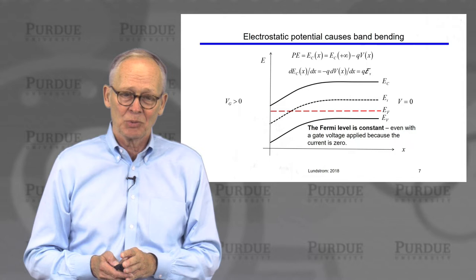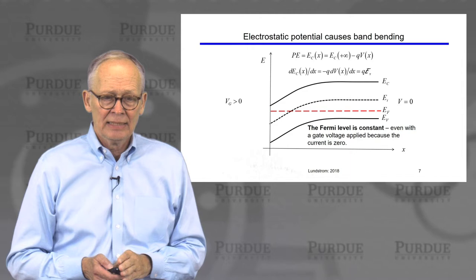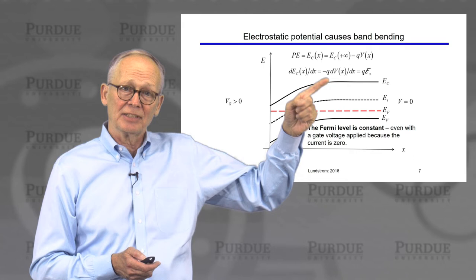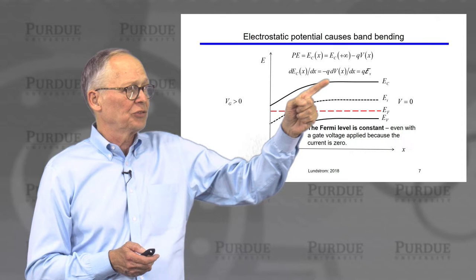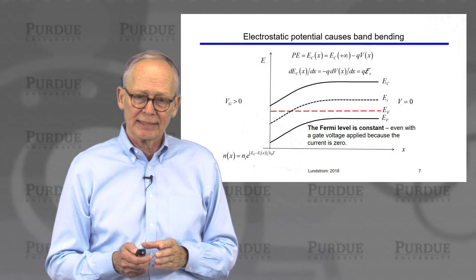That's a simple energy band diagram, but it actually tells us quite a lot about what's going on. One thing we can see immediately is that if I take the slope of the conduction band, or of the valence band, or of the intrinsic level, that slope is related to minus the gradient of the electrostatic potential, which is the electric field. So that slope is q times the electric field. Looking at this energy band diagram, we can see where the electric field is large, whether it's positive or negative or zero, just by looking at the slope.